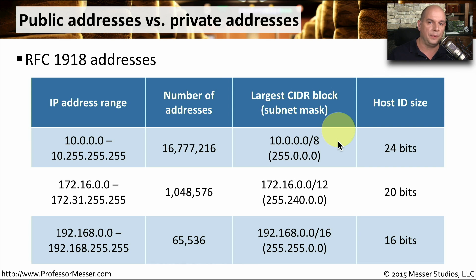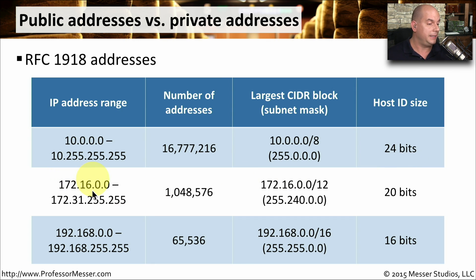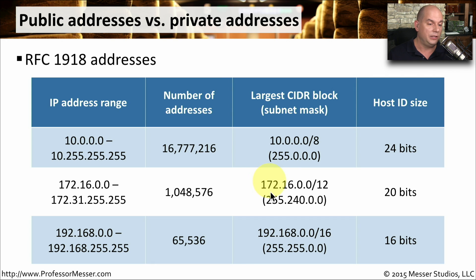In CIDR block notation, we write it as 10.0.0.0/8. We'll talk more about CIDR block notation in the next video. Written in decimal, the subnet mask would be 255.0.0.0, meaning the first eight bits are the network address and the last 24 bits can be used for hosts. The next range is 172.16.0.0 through 172.31.255.255, written as 172.16.0.0/12, giving us 20 bits available for hosts.